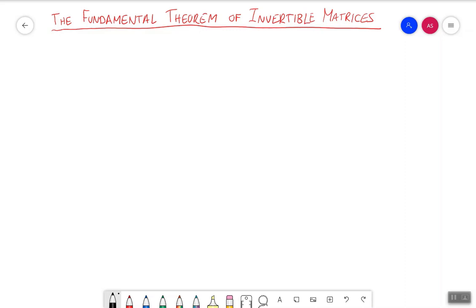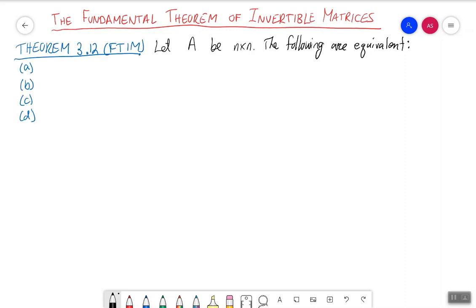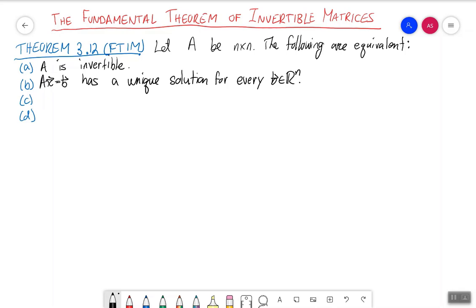It's a theorem. Let A be an n by n matrix. The following are equivalent: (a) A is invertible. (b) AX = B has a unique solution for every B in R^n. (c) AX = 0 has only the trivial solution. And finally, (d) the reduced row echelon form of A is the n by n identity matrix.